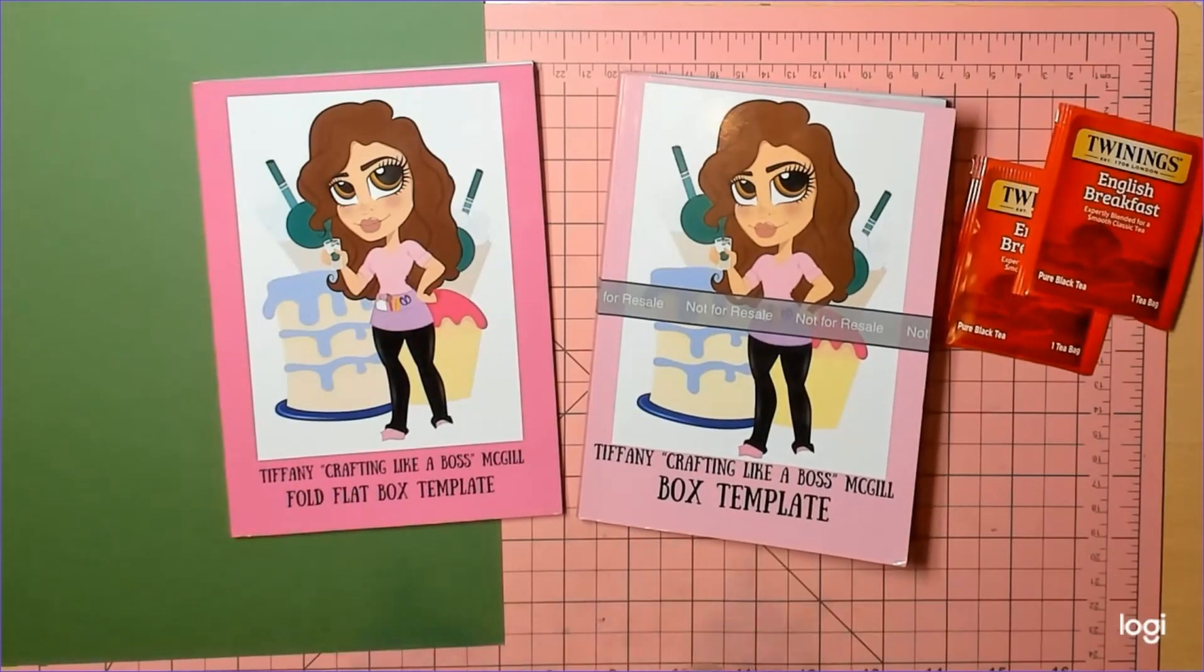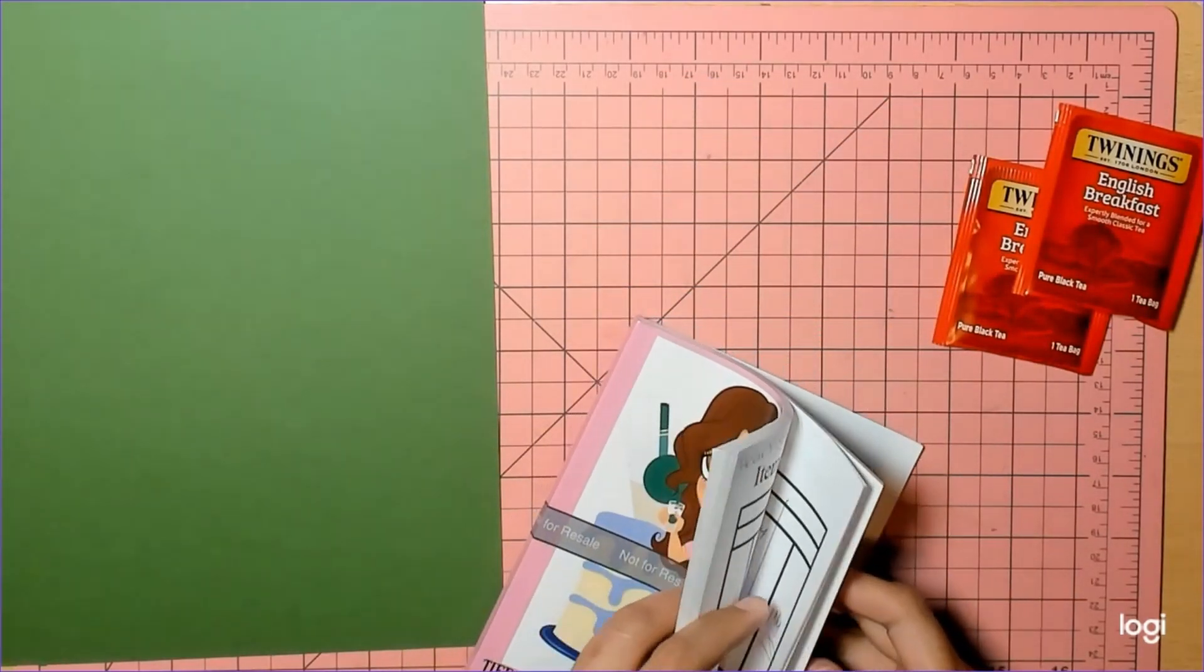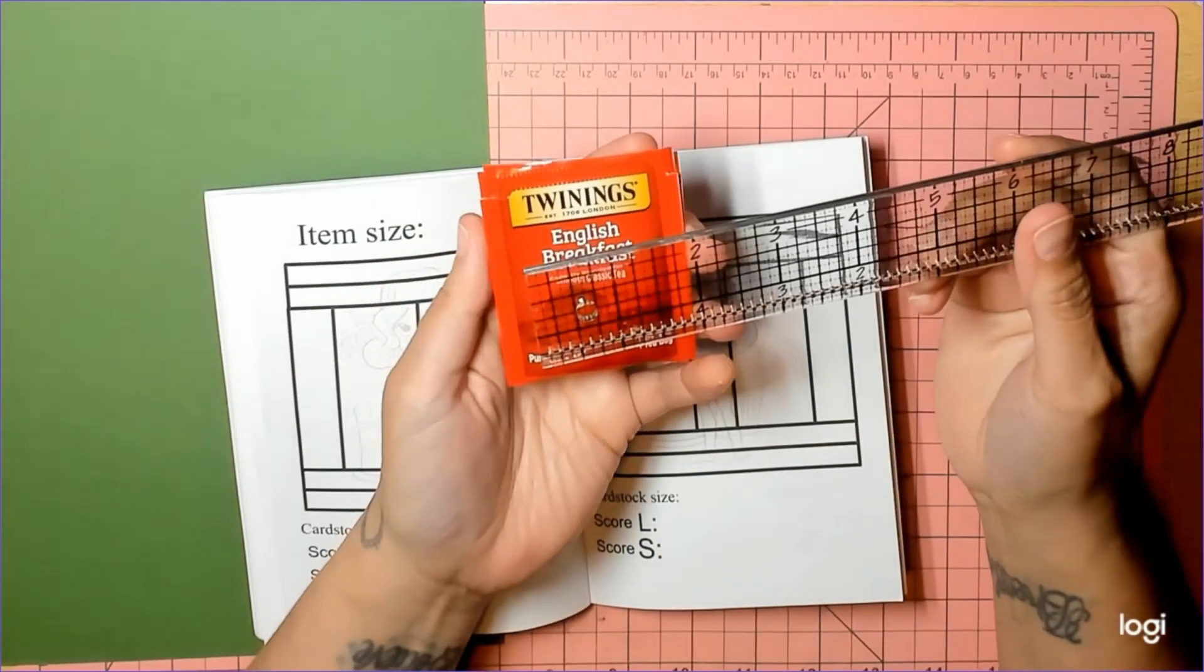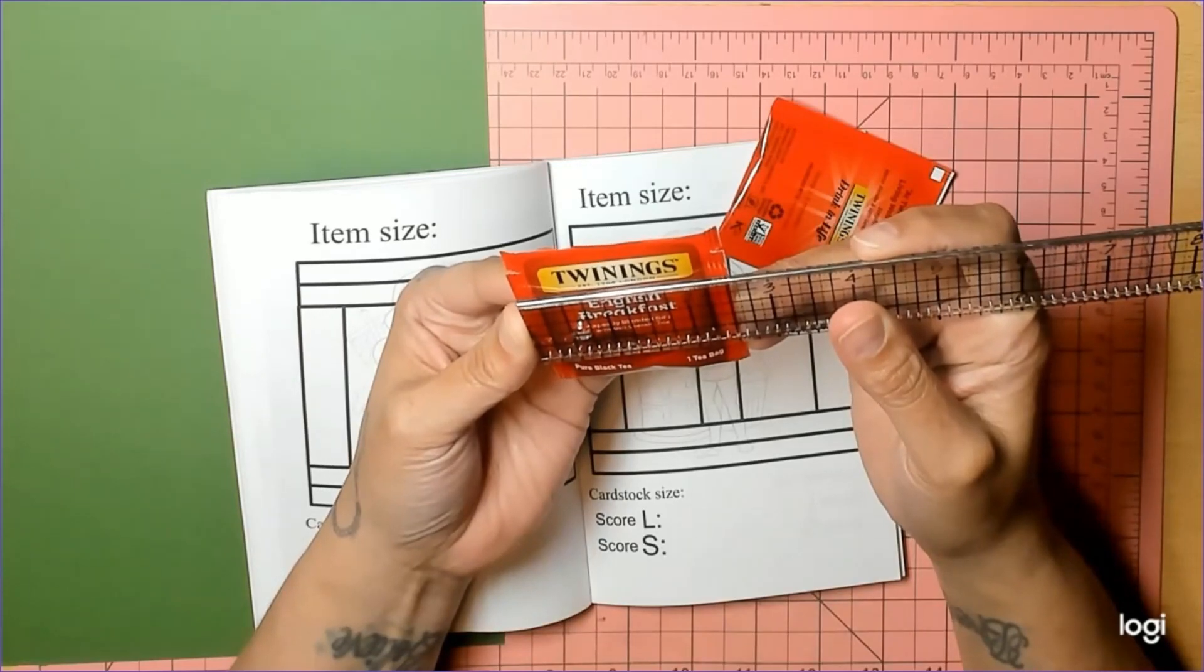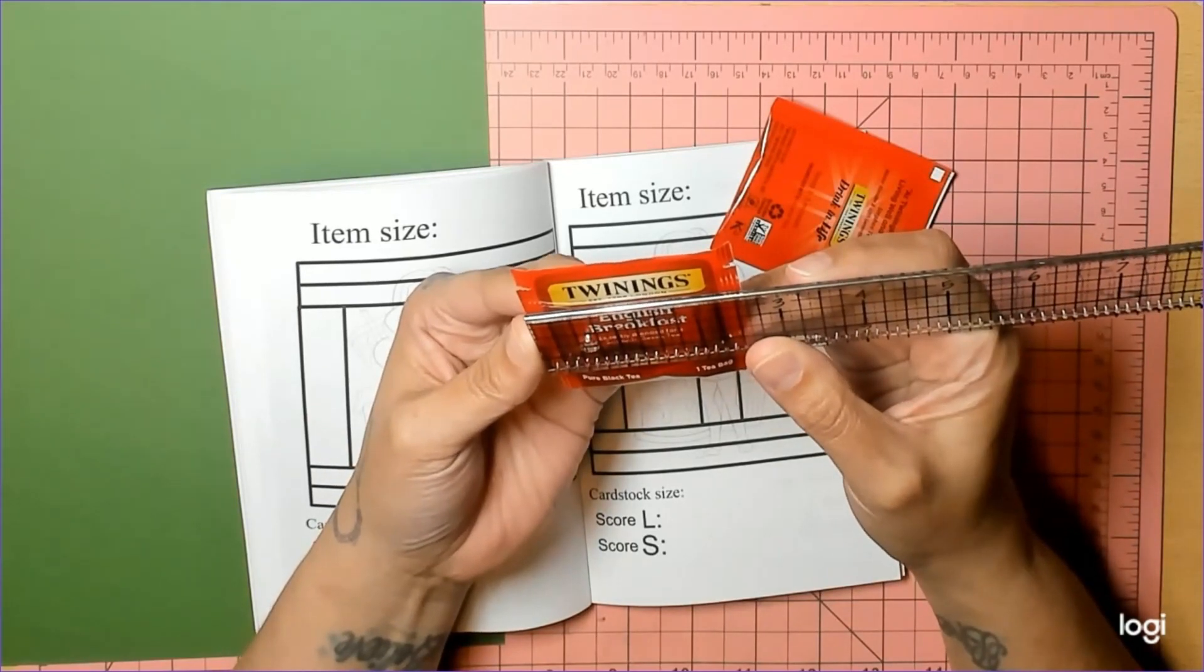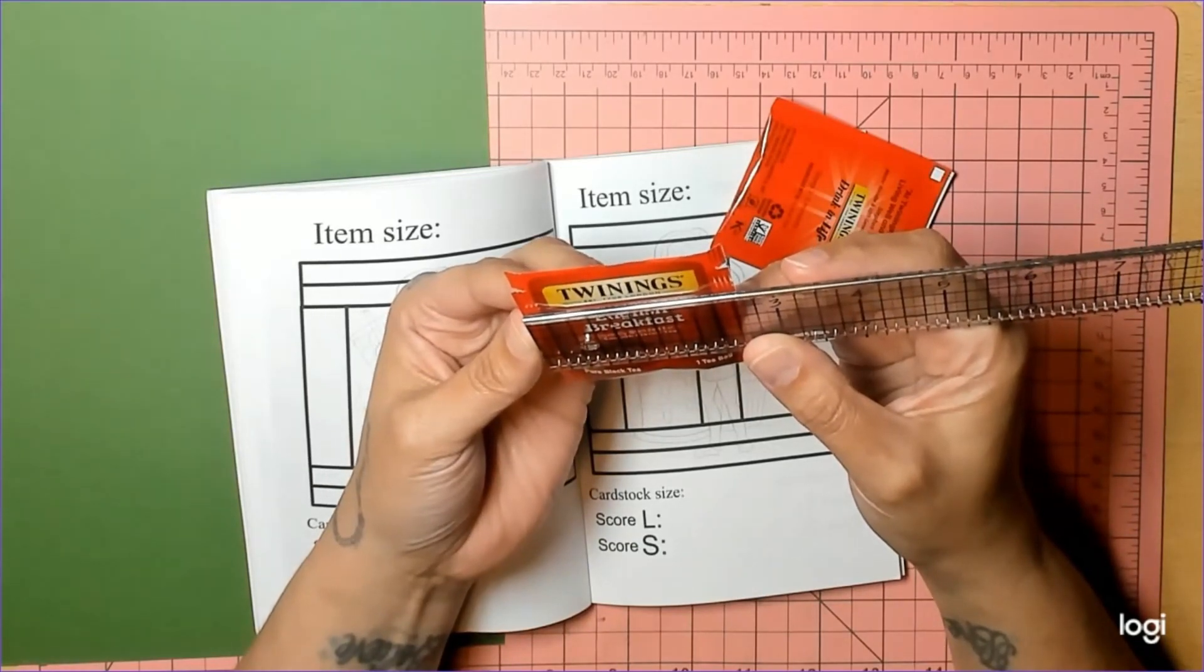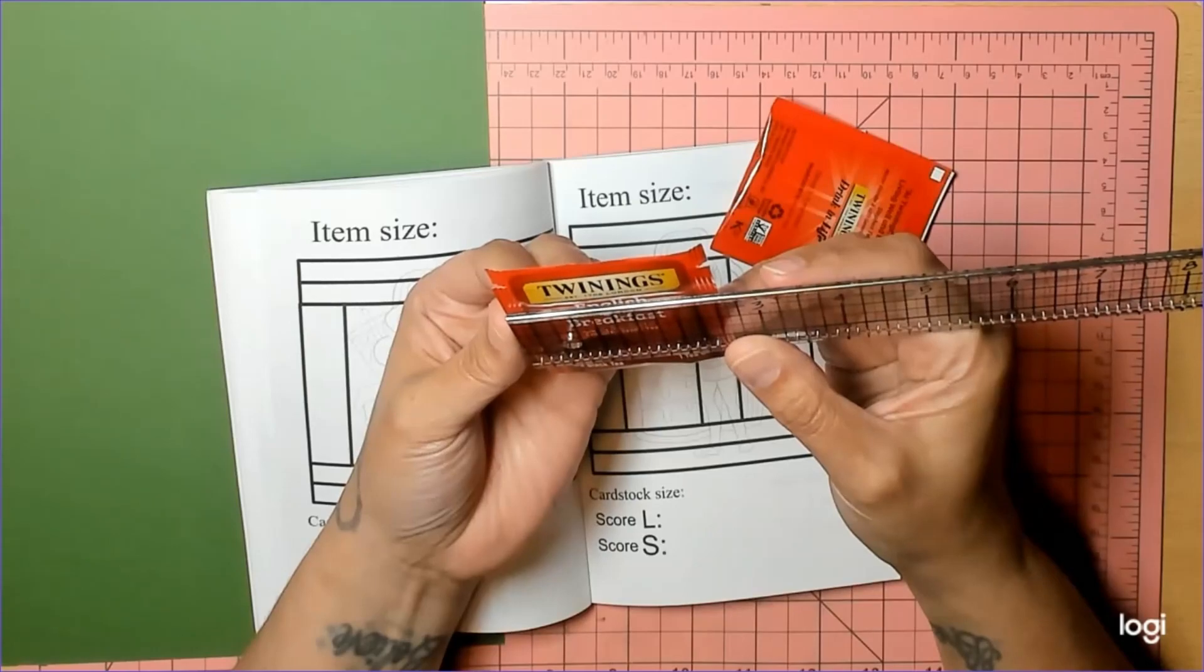Let me find a blank page here. We're going to measure our tea bags. This is specifically for the Twinings English Breakfast, but the Twinings Irish Breakfast is going to be the same. They're about two and a half—I'm going to have to do eighths—by three.